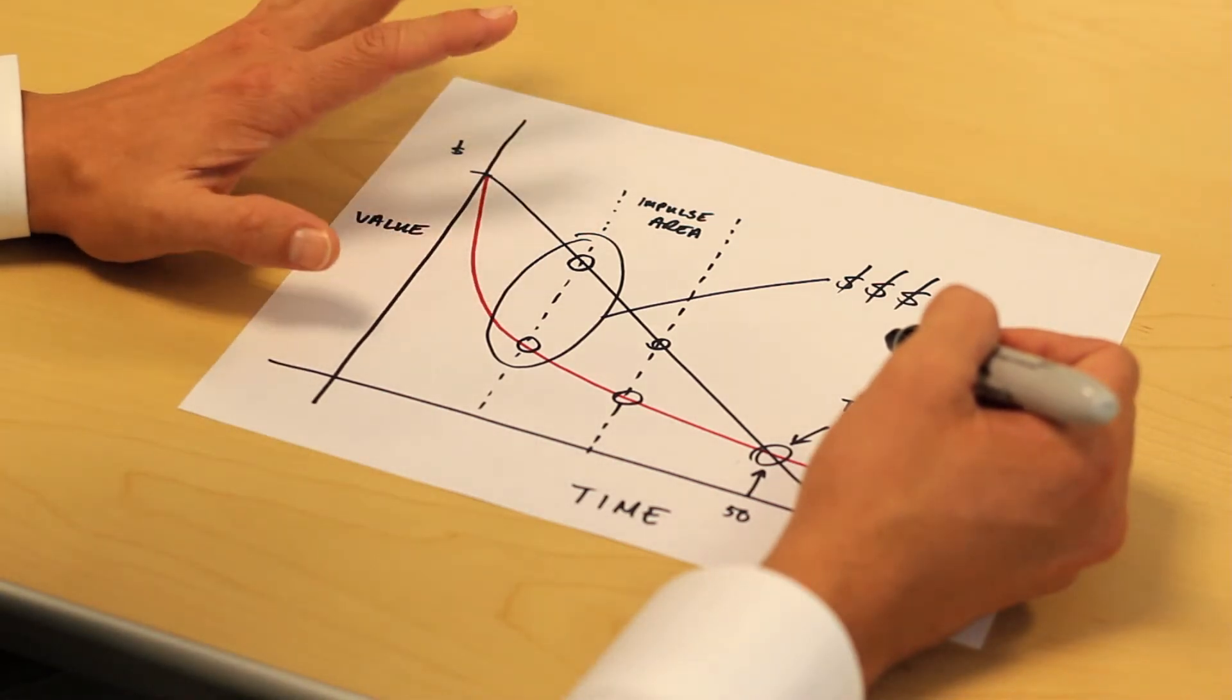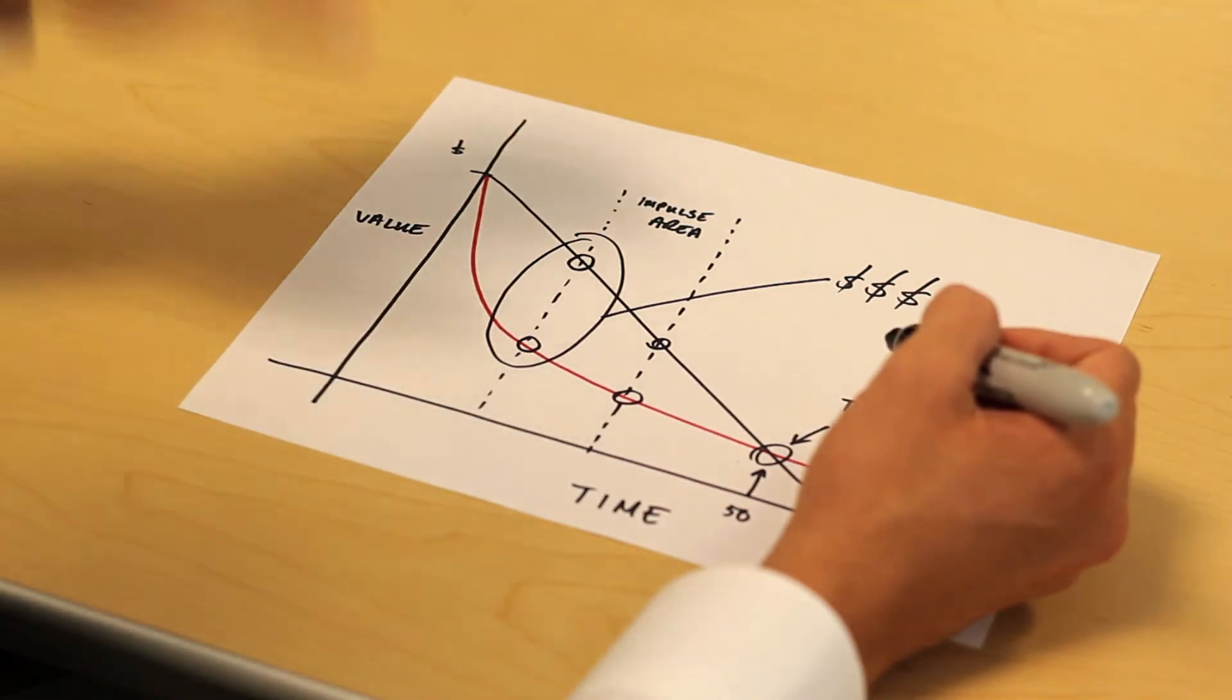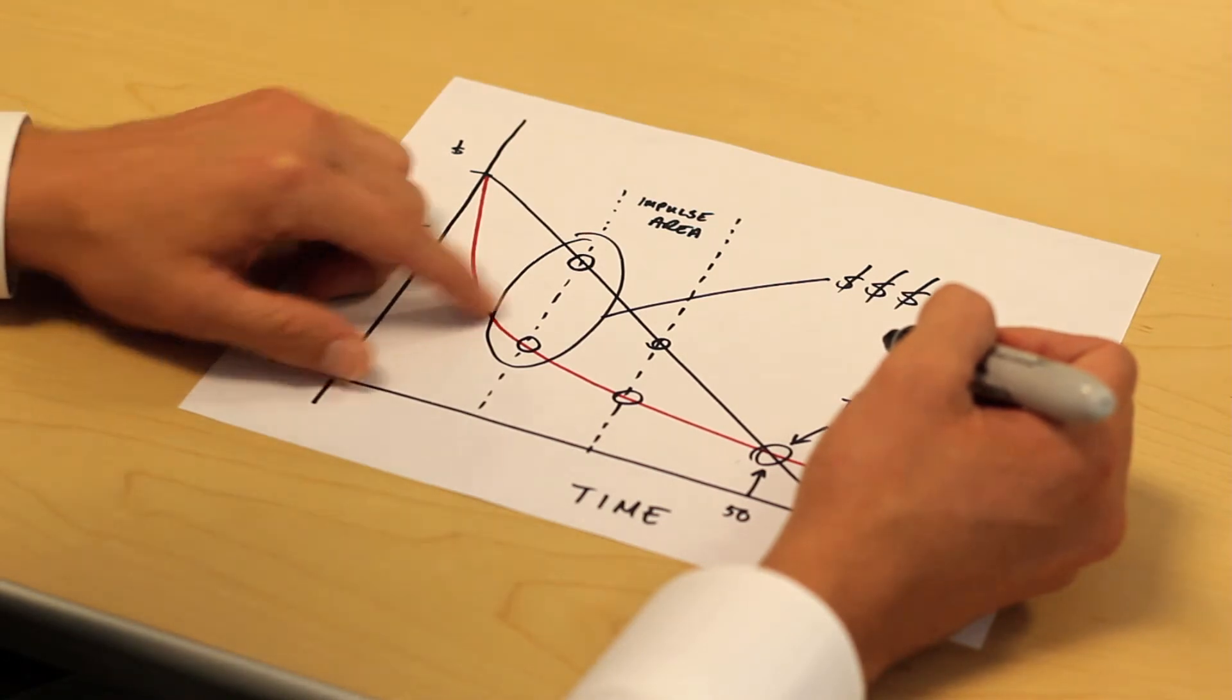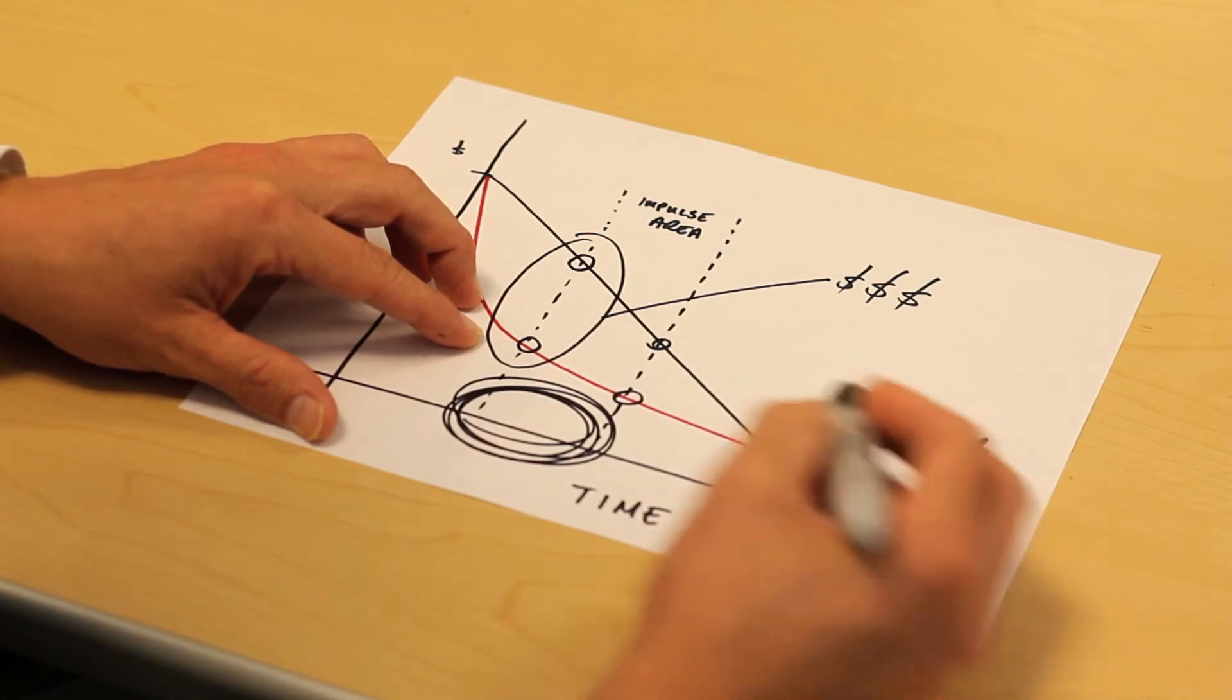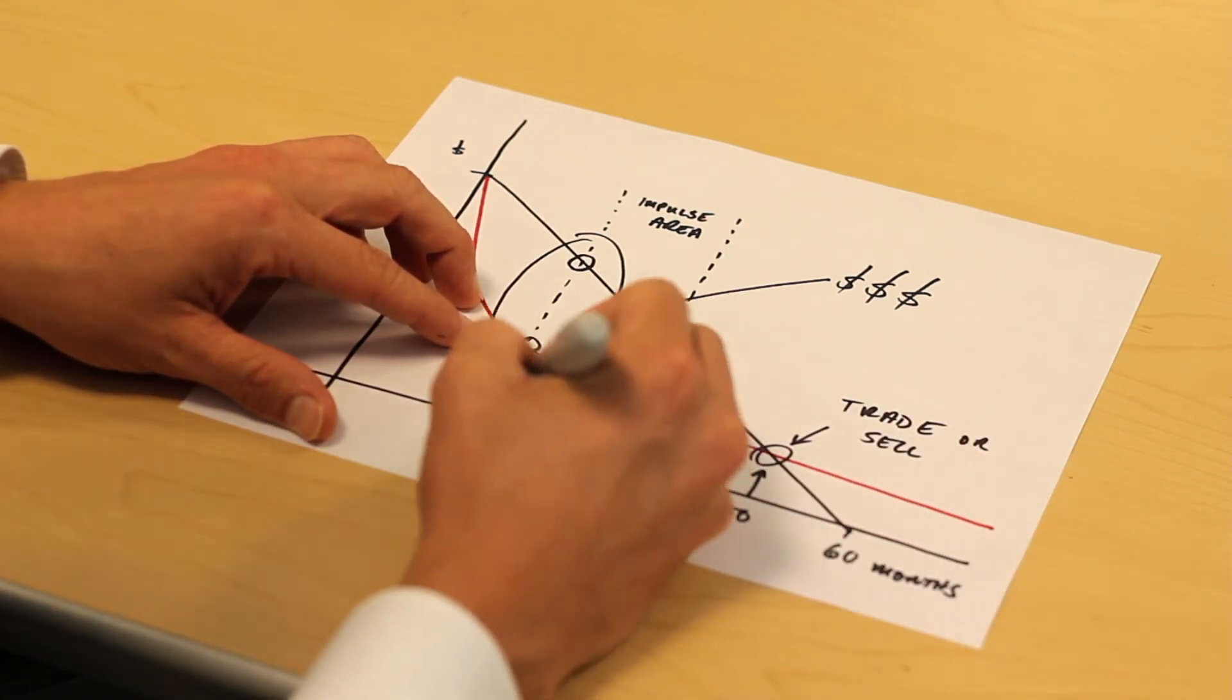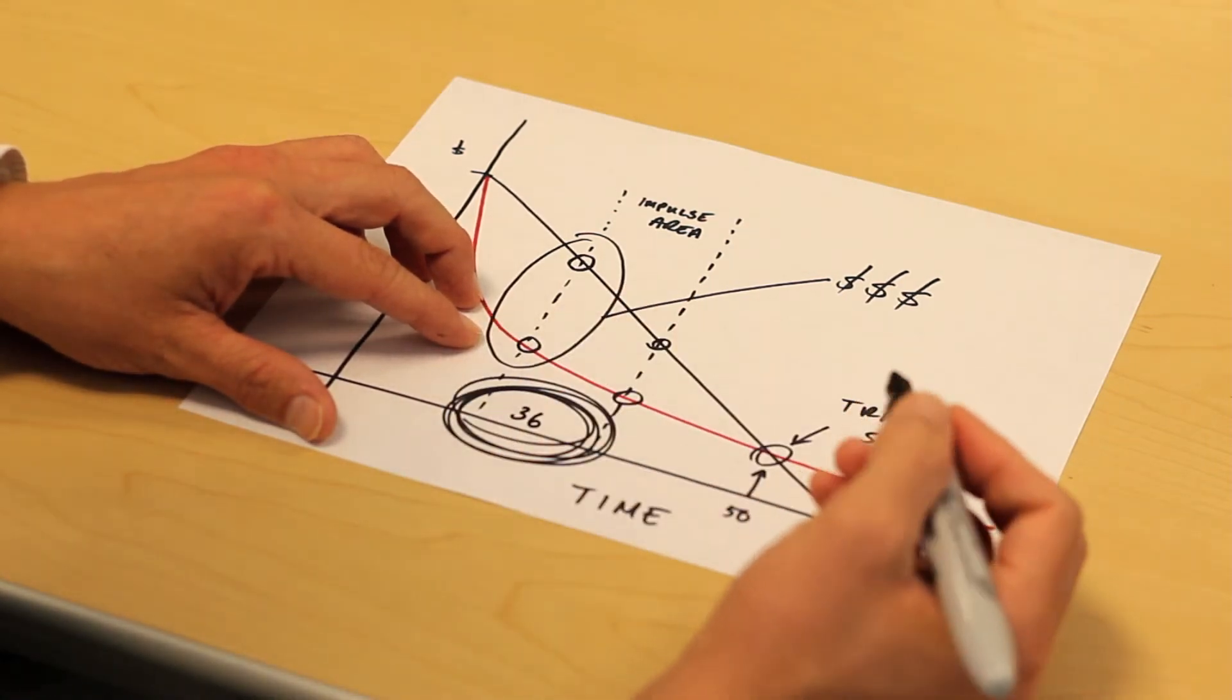So when you look at leasing a car, the difference is that right around this impulse area, right in this time frame is generally when your lease is due. And that's usually around maybe like 36 months or something like that.